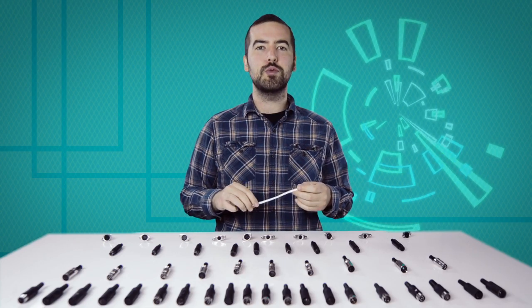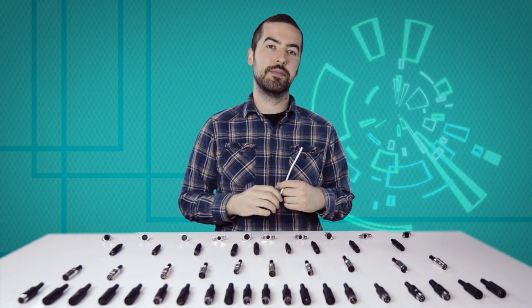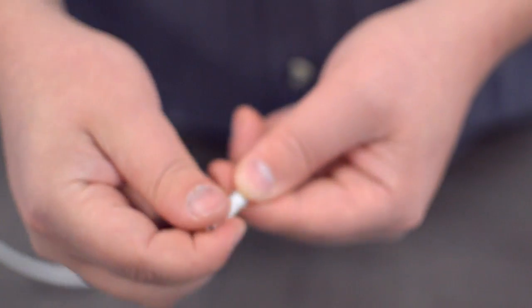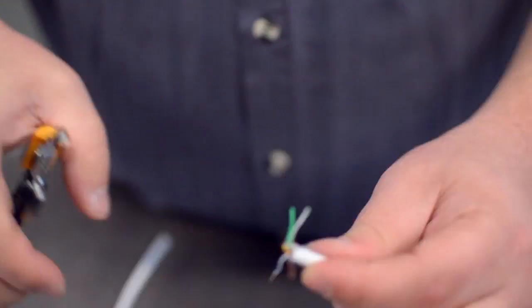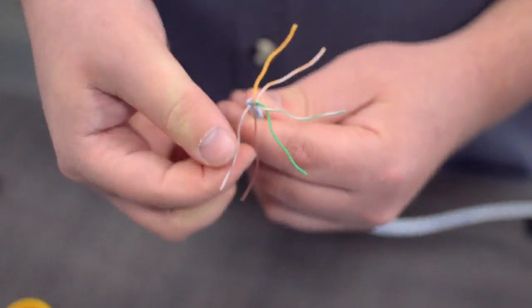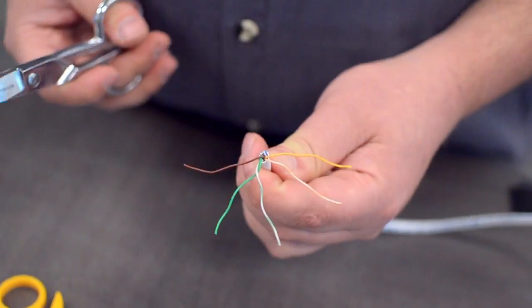For this example, we will be using CAT 5E cable. You will also need to strip the individual conductors. Trim off any additional conductors if needed.